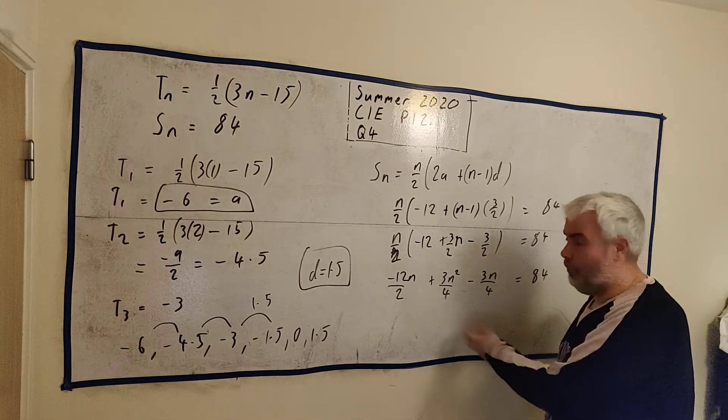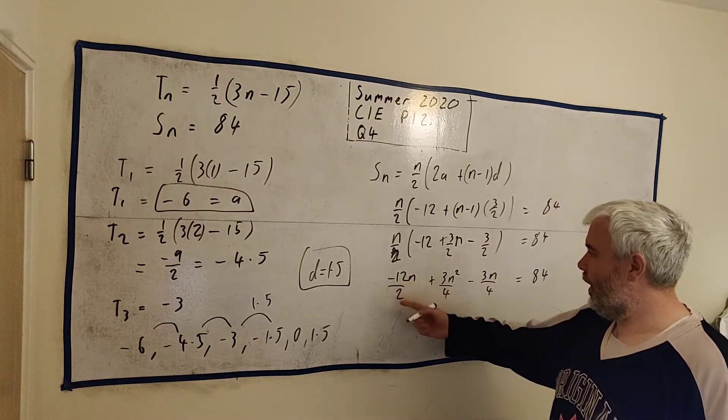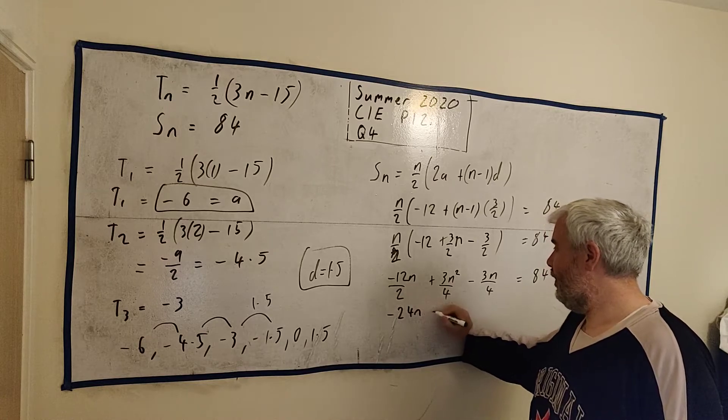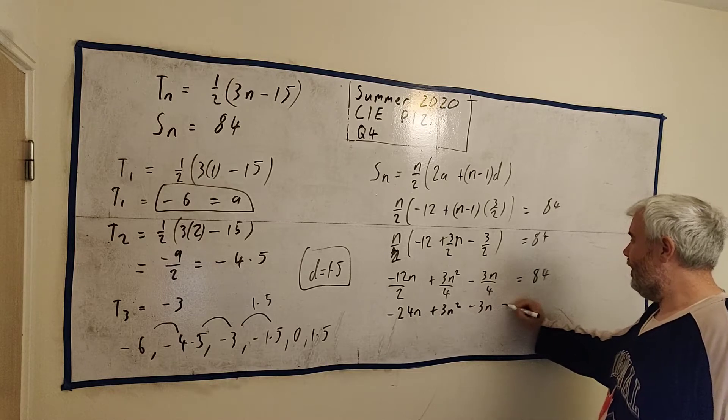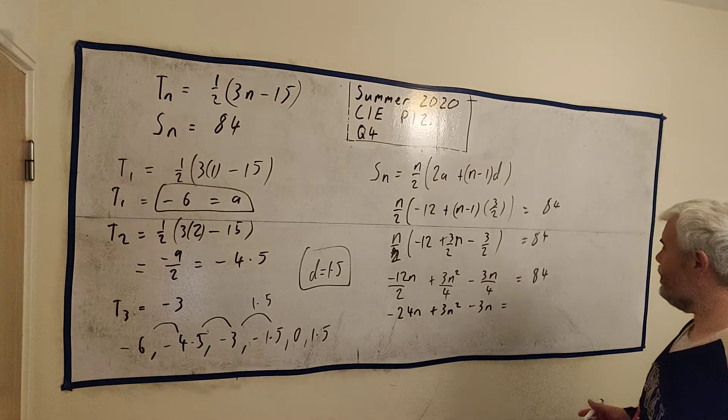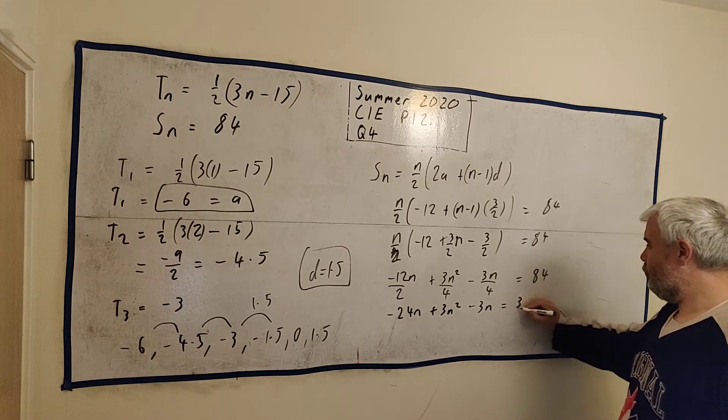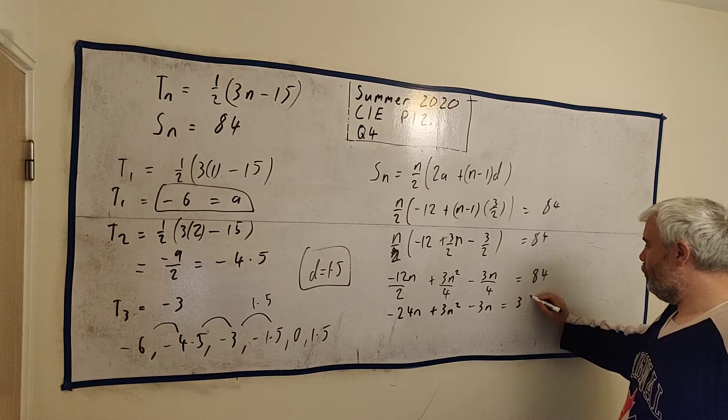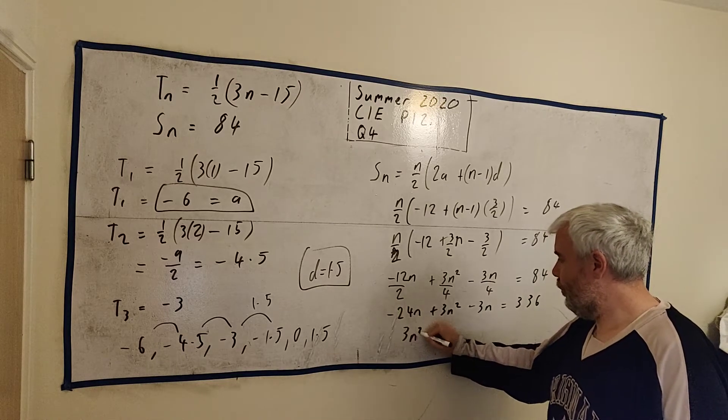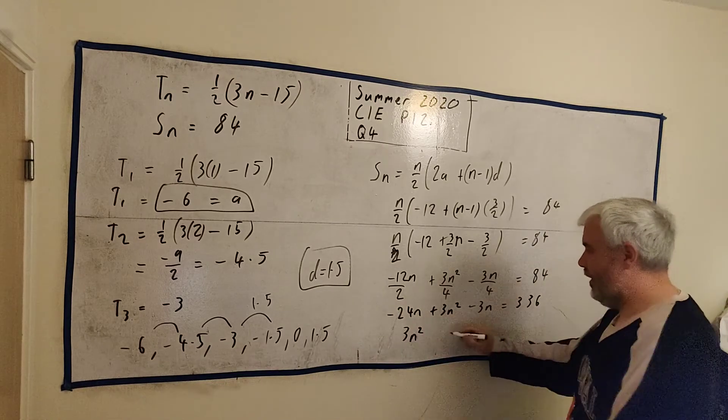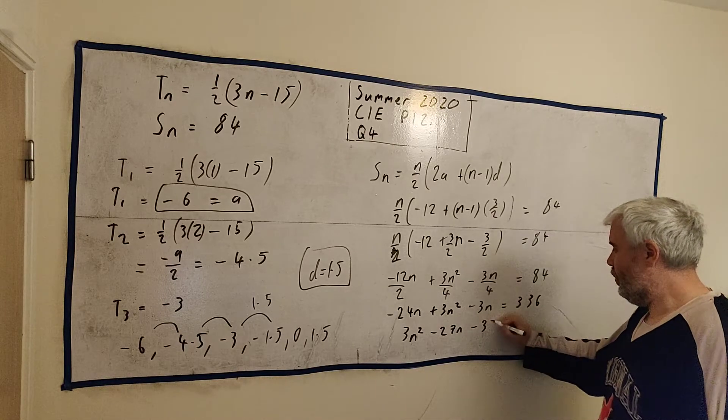Let's get rid of these bottom rows. Multiply everything by 4 will make it disappear. If we multiply this by 4, we get minus 24 N plus 3 N squared minus 3 N equals, and that times 4 is 320 plus 16, which is 336. Let's clean this up some more. We'll have 3 N squared first. Let's get all the N's together. Minus 27 N and minus 336.